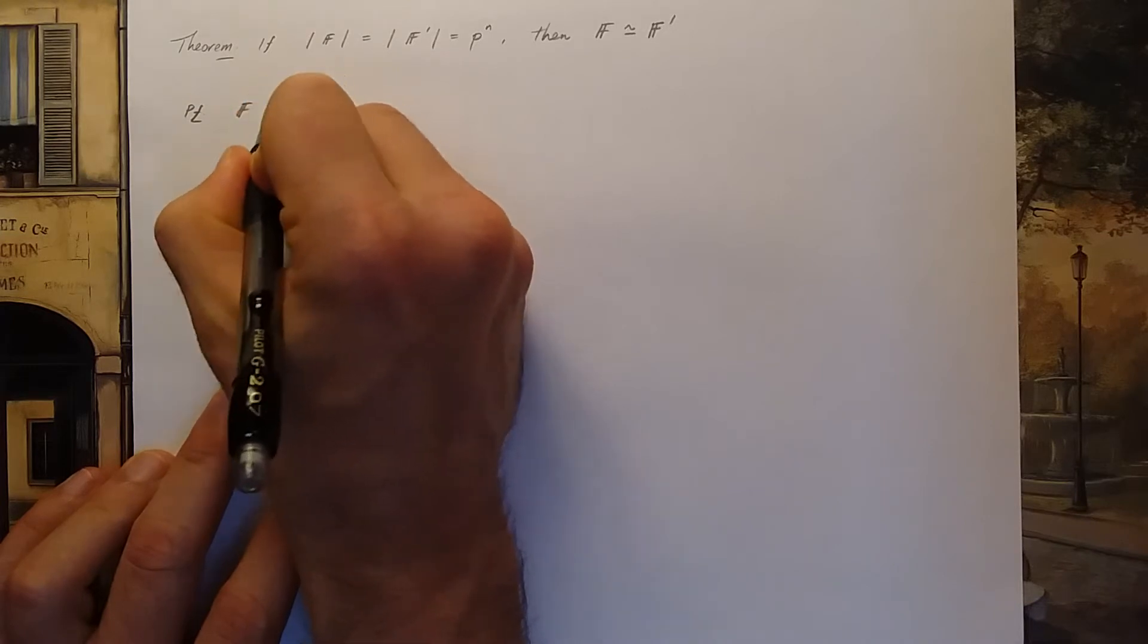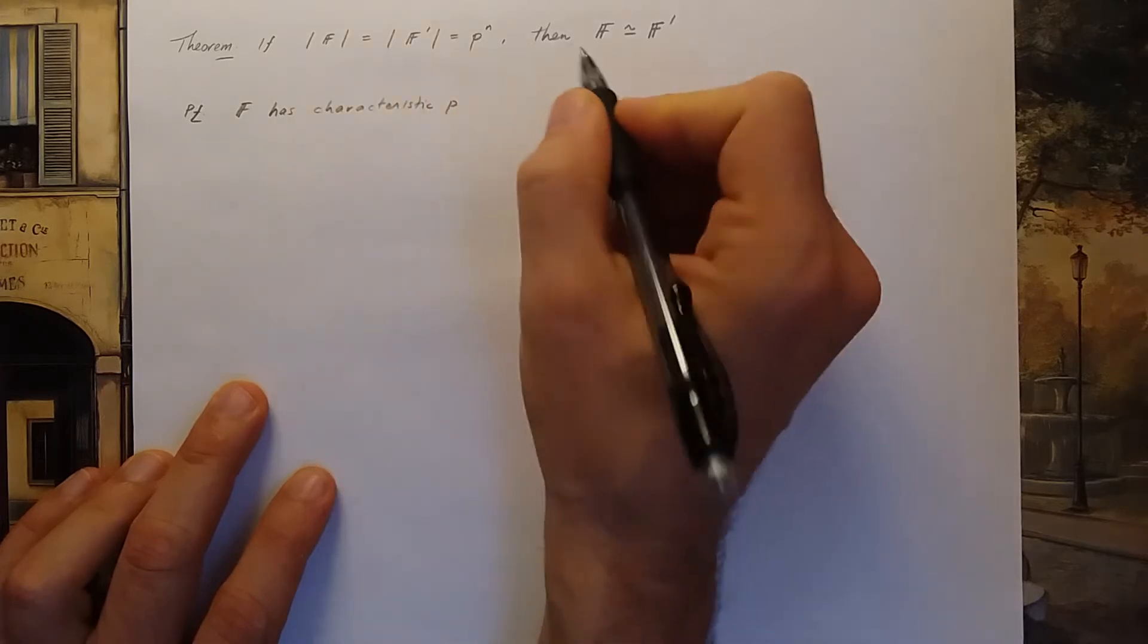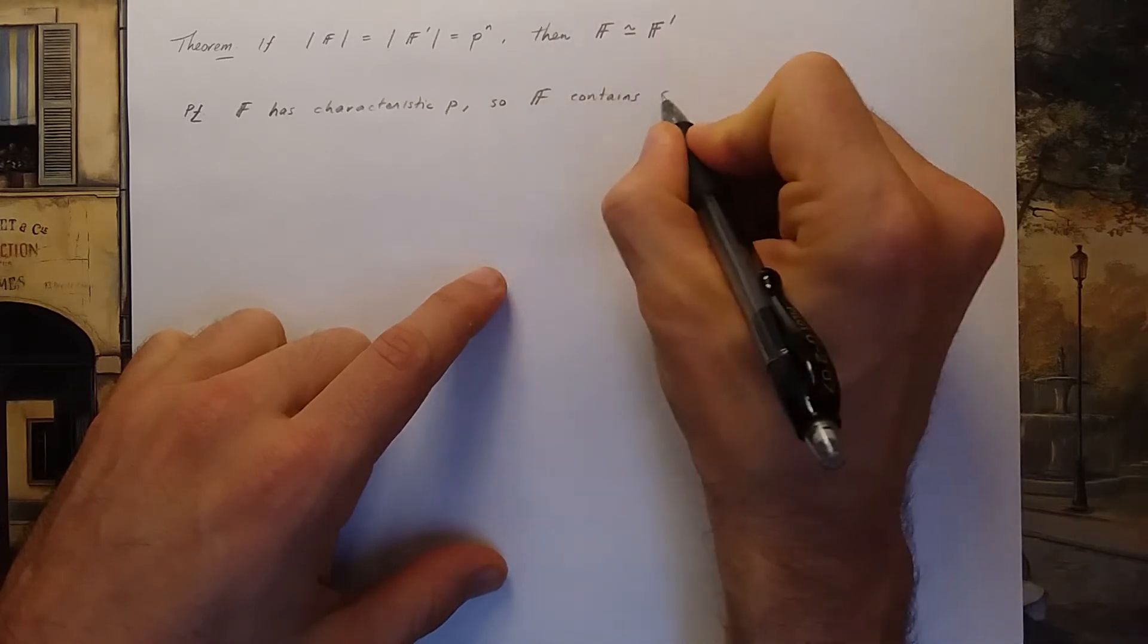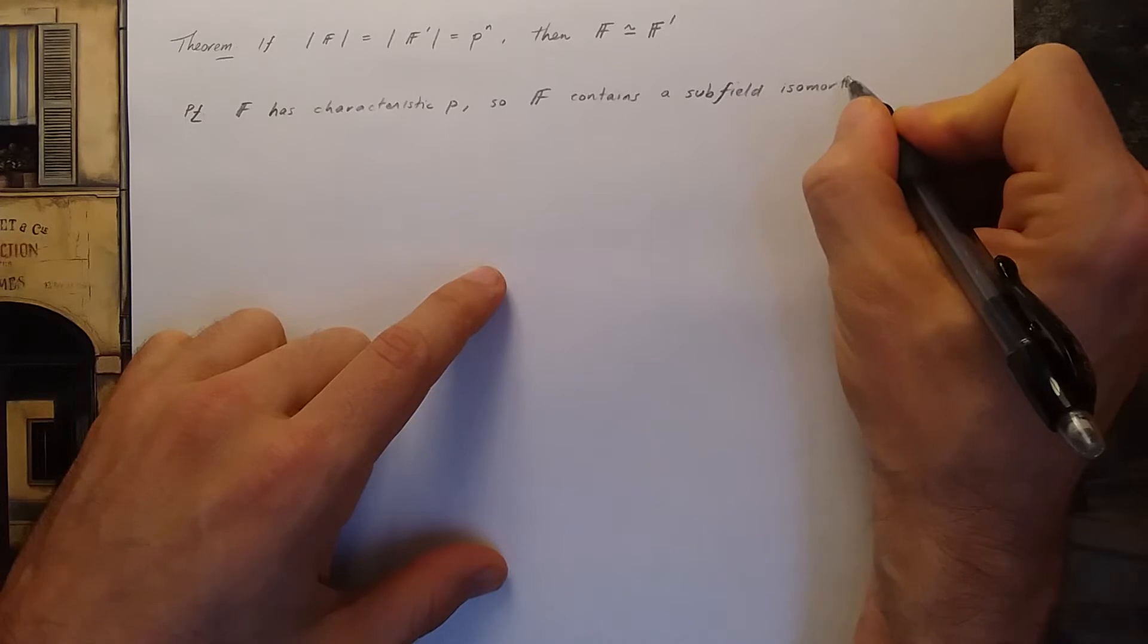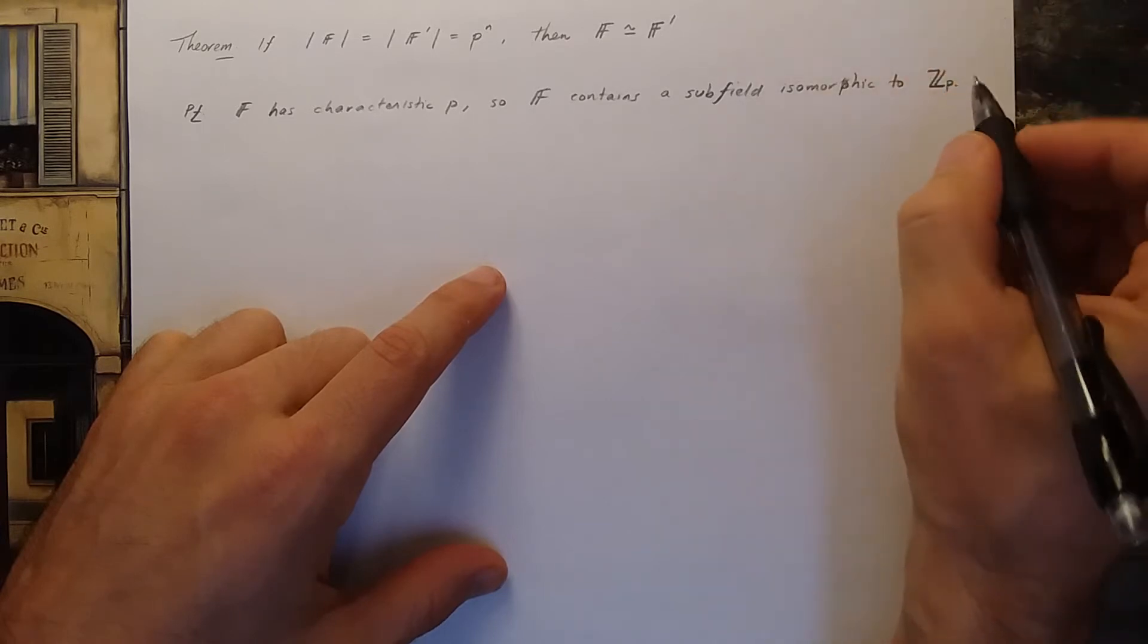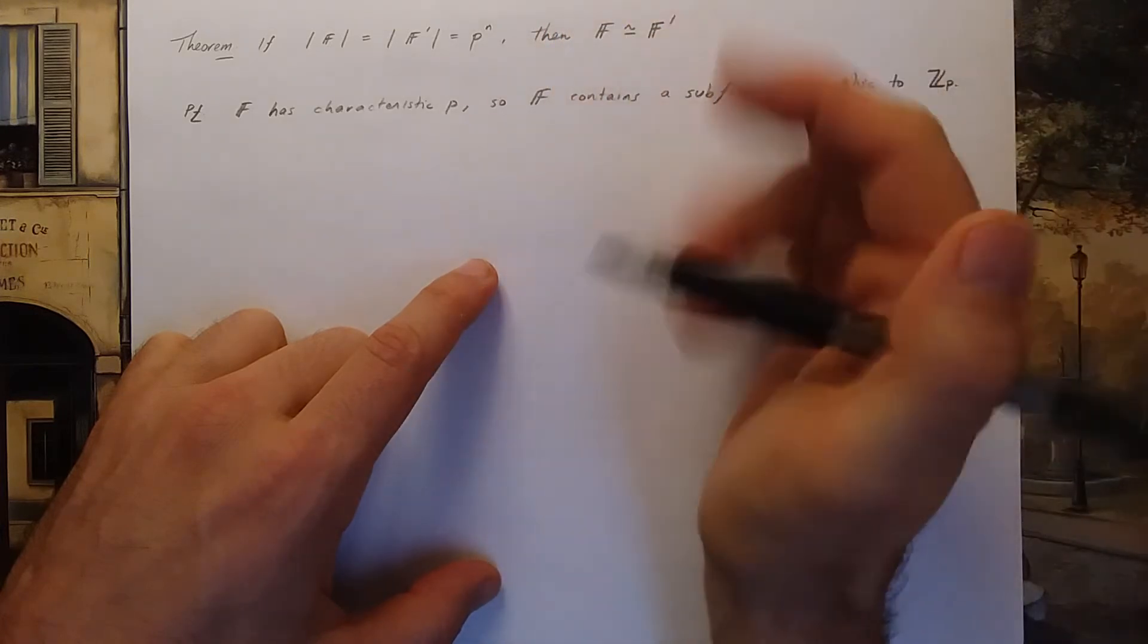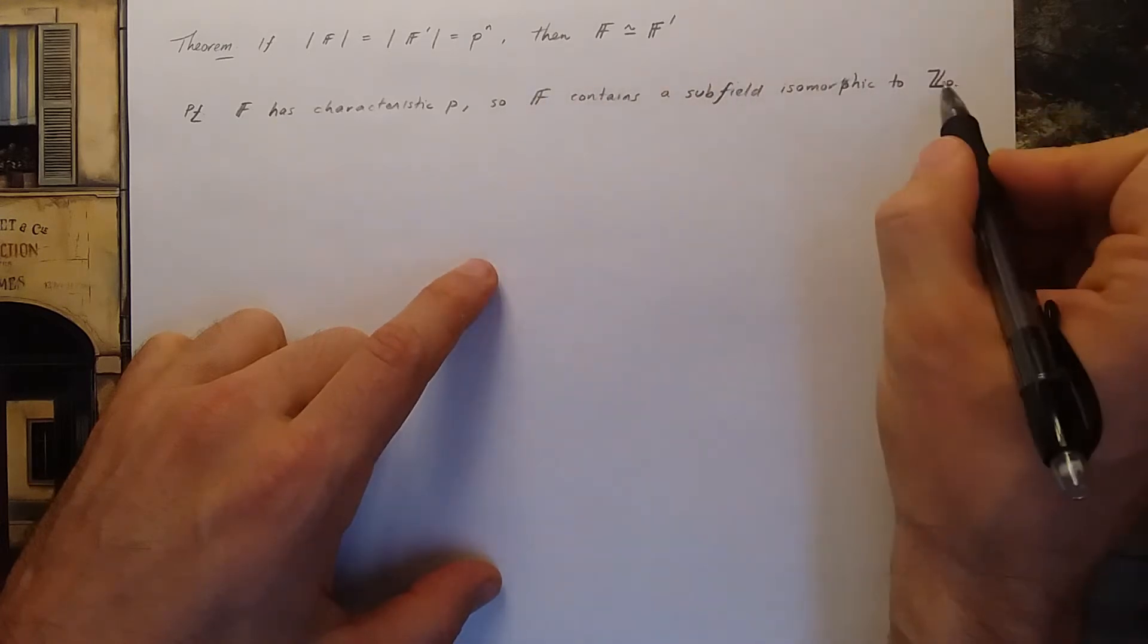So the field F has characteristic p. We saw why in a previous video. So what that means is that the field F contains a subfield isomorphic to Zp. You could define a one-to-one ring homomorphism from Zp into the field F by sending an element a in Zp to one plus one plus one a times. So that means the field F contains Zp as a subfield.